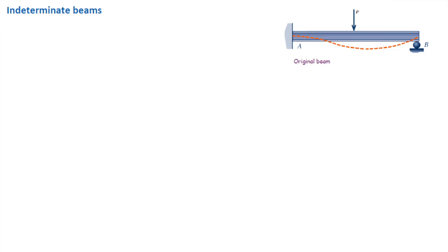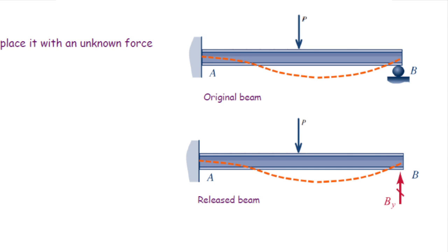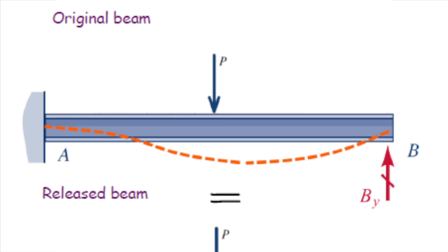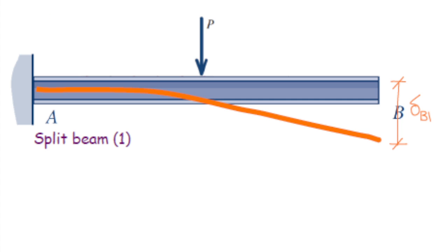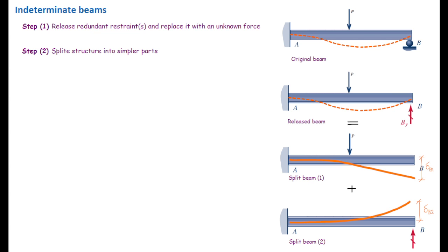I want to give you one algorithm to solve indeterminate beams. Step one: release the redundant support and replace it with a reaction force — in this case, B-y. That is our released structure. Step two: split the released structure into simpler parts. In this case, there are two loads acting on the beam — one cantilever beam subjected to concentrated load P, and the other cantilever beam subjected to the reaction force.